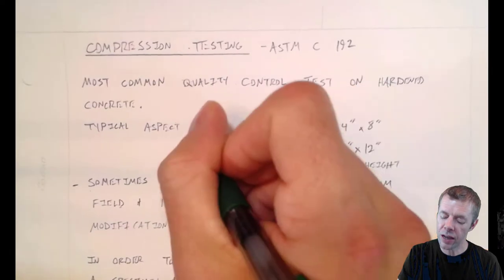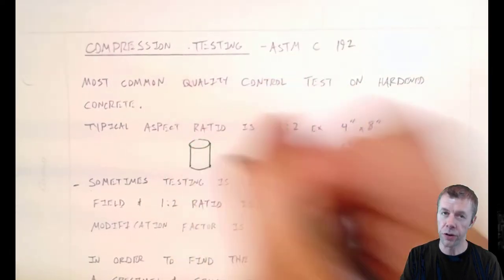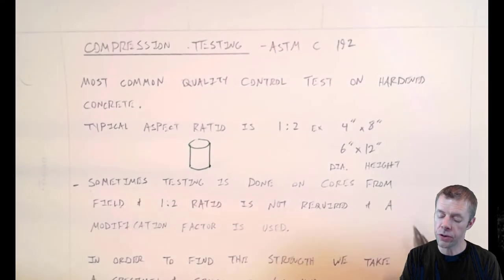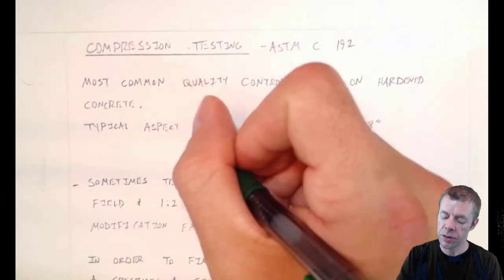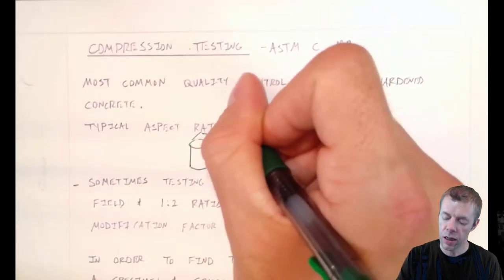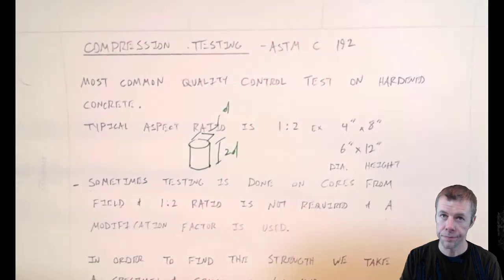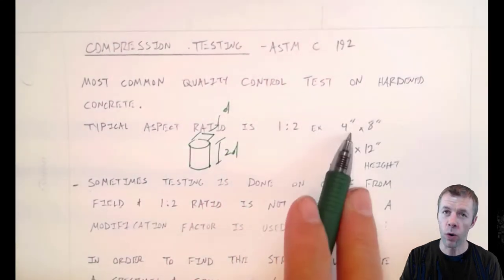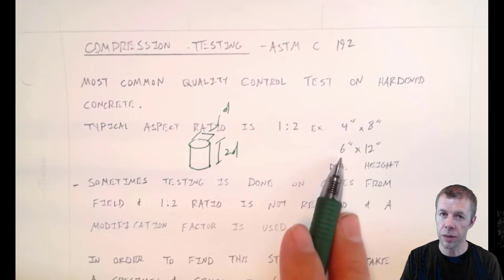Typically, we do these tests, at least in North America, on cylinders. And these cylinders have a one to two aspect ratio. It means if this dimension is D, that means this dimension is twice D. Sometimes it's a four-inch diameter by eight-inch height. Sometimes it's six-inch diameter by 12-inch height.